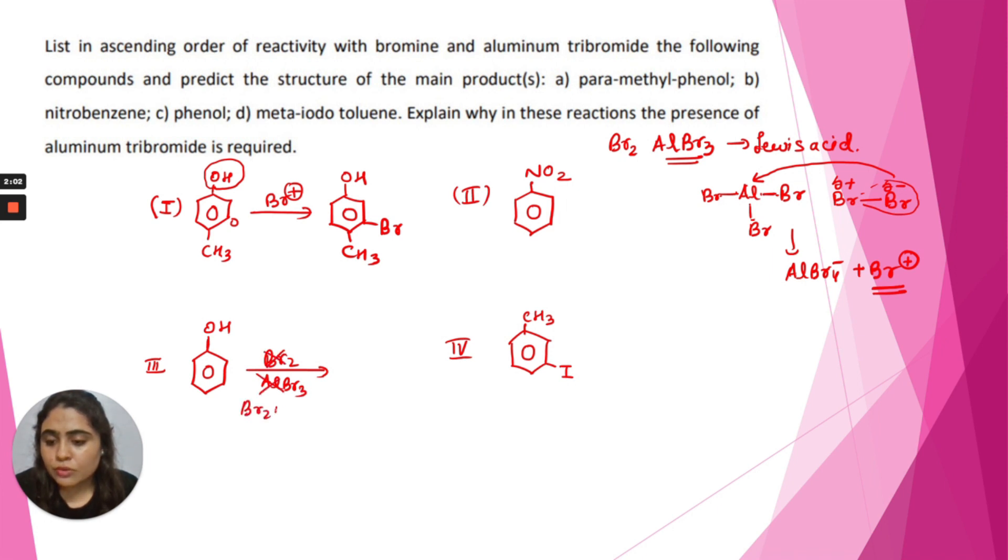It reacts only with bromine water, which is a polar solvent. So it reacts with bromine water to form 2,4,6-tribromophenol. When this phenol reacts with an inert solvent like carbon disulfide or carbon tetrachloride, then only ortho or para product will be formed. But in this case, it will be 2,4,6-tribromophenol. So phenol will be the least reactive in this case.